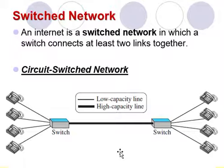The reason we need to make the capacity of the thick line four times the capacity of each voice line is that we do not want communication to fail when all telephone sets on one side want to connect with all telephone sets on the other side. These are the two cases for the circuit switch network.